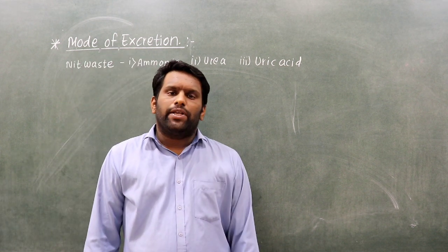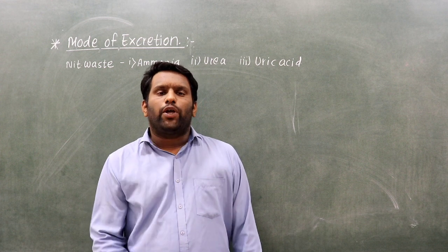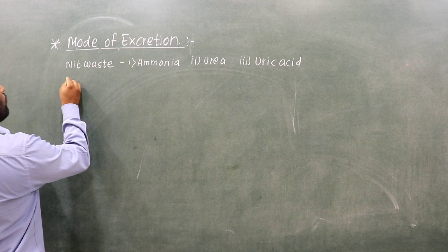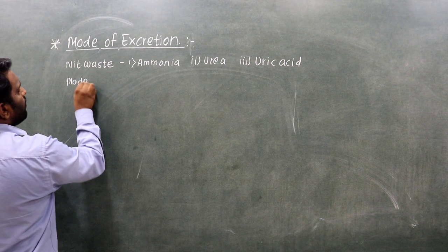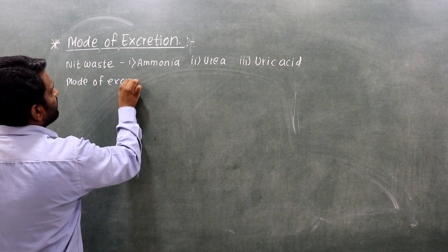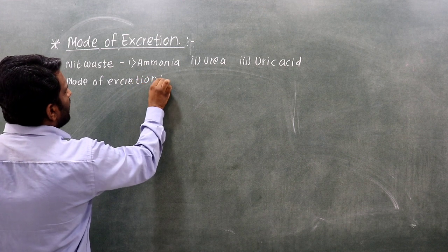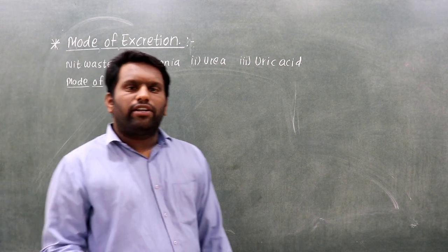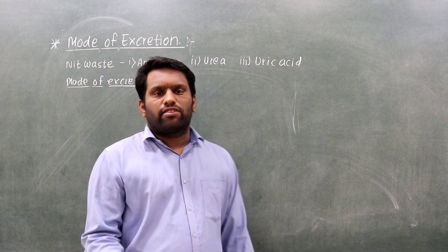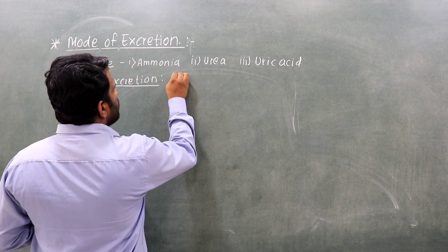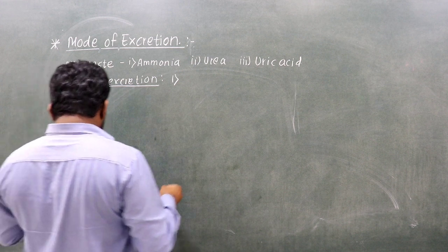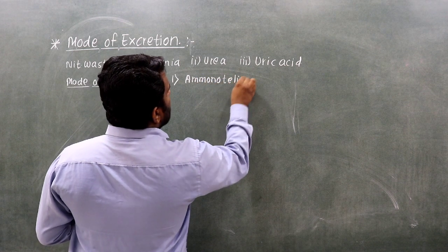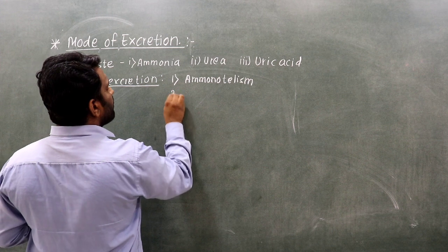On the basis of the excretory product, there are five types of excretion. The modes of excretion are as follows, depending upon the excretory product an organism produces in its body.